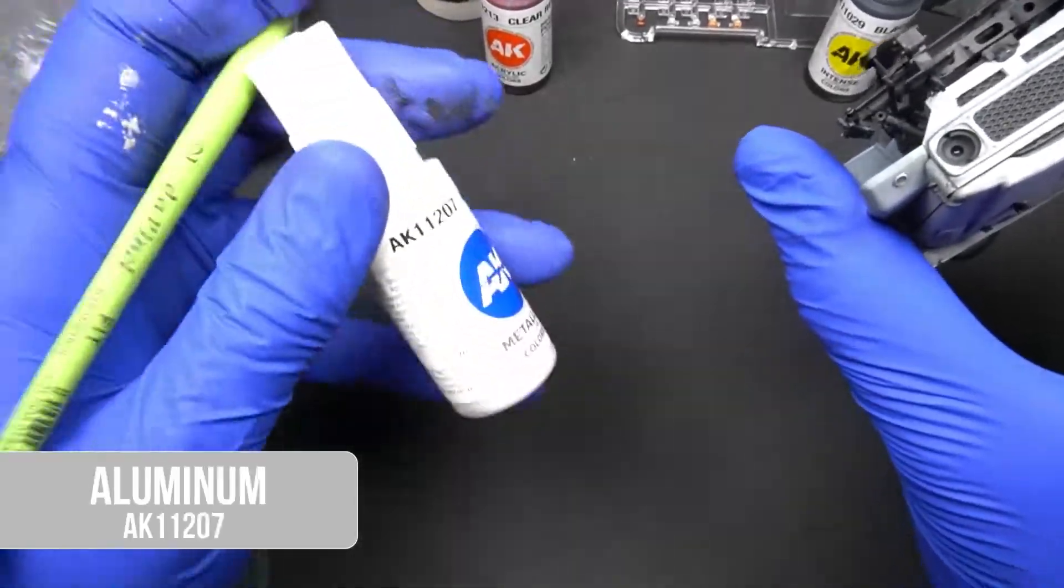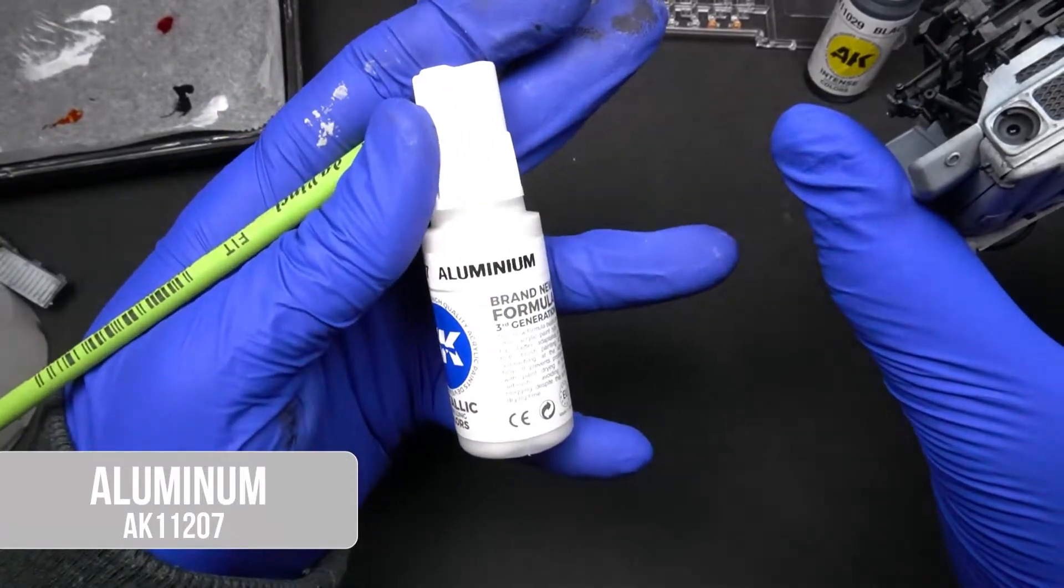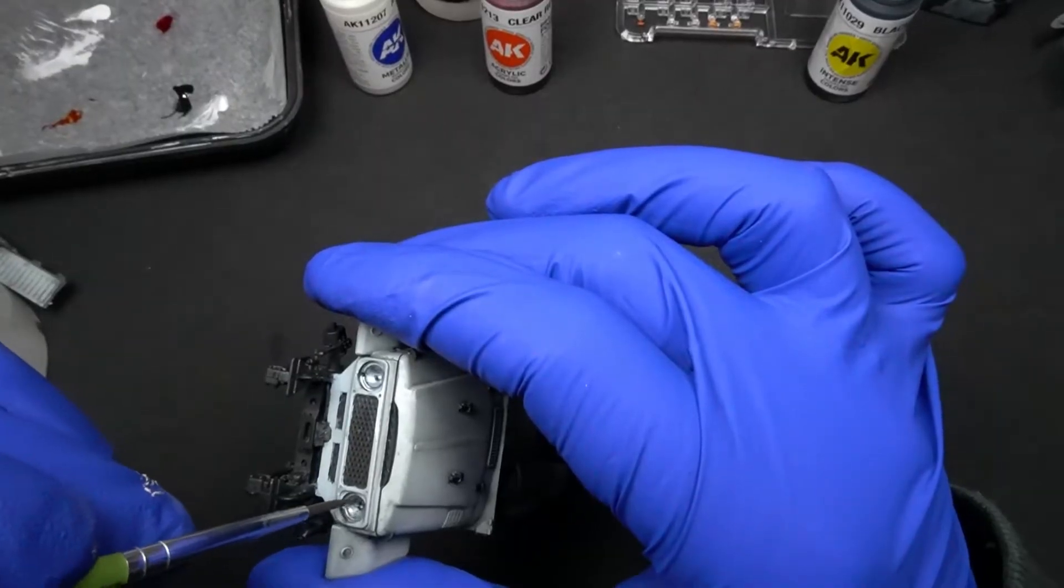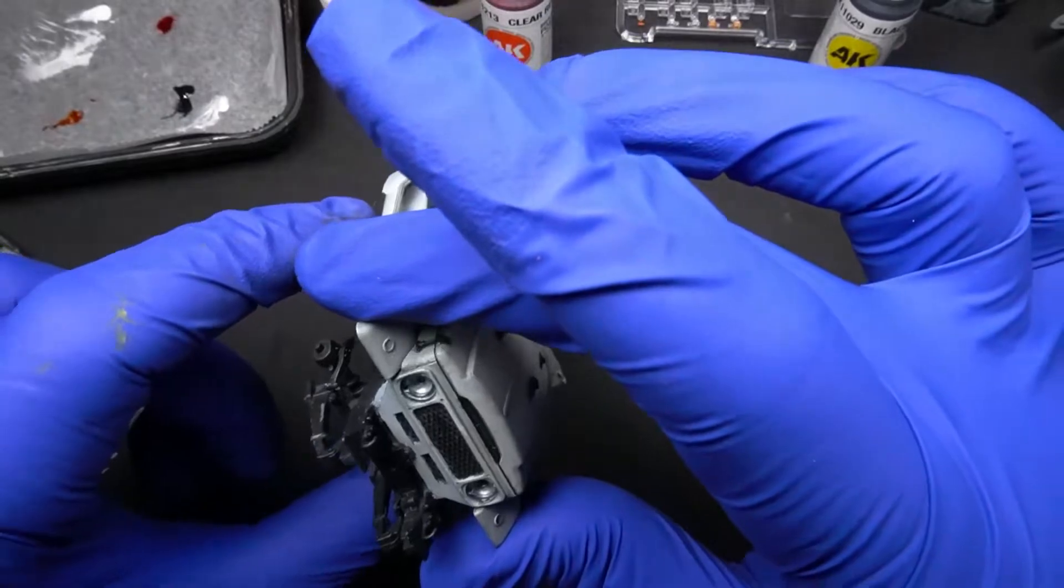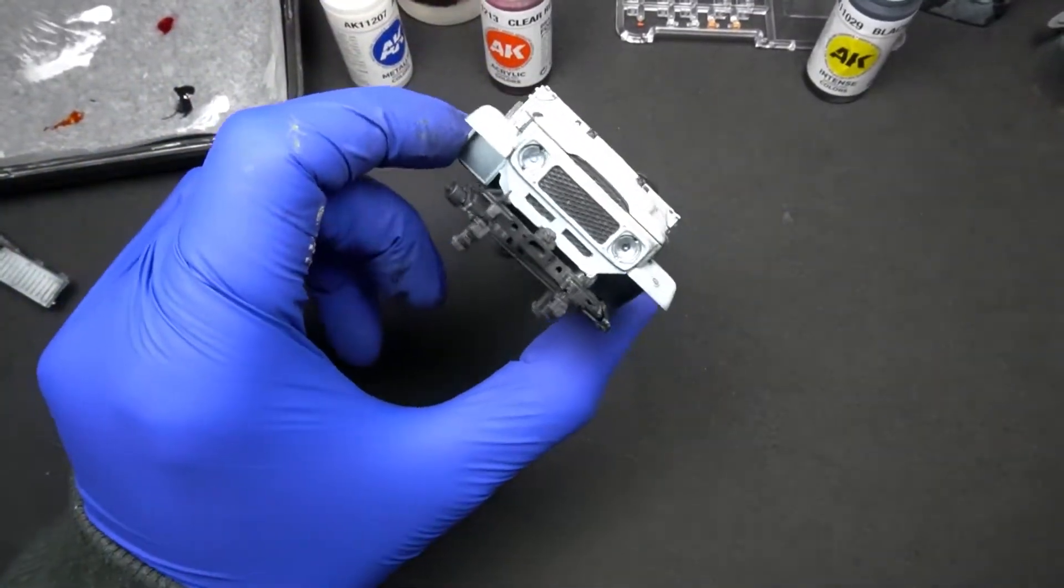We'll use aluminum to paint the interior of the headlights. Remember to add 10% of water to metallic paints so that they work smoothly.